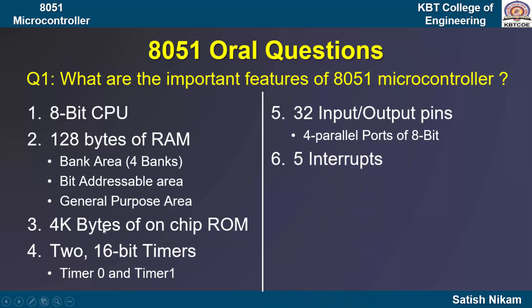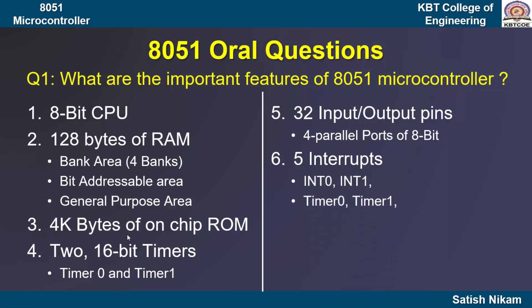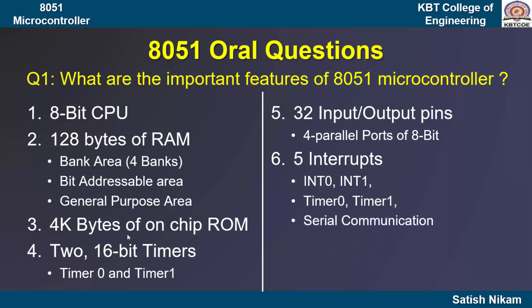In 8051, there are a total of 5 interrupts. Out of these, two are external interrupts, that is INT0 and INT1. Two interrupts are related to the timers, that is Timer 0 and Timer 1. And one interrupt is related to serial communication.